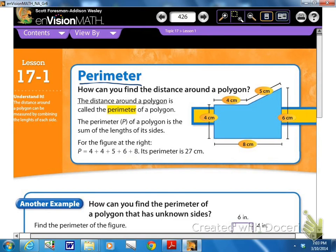How can you find the distance around a polygon? So the distance around a polygon is called perimeter, or the perimeter of a polygon, and they let P stand for perimeter. So the perimeter of a polygon is the sum of the lengths of its sides.